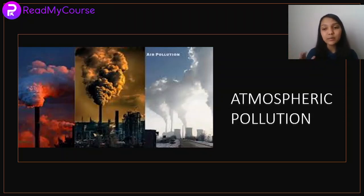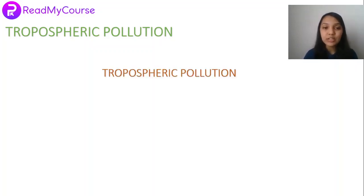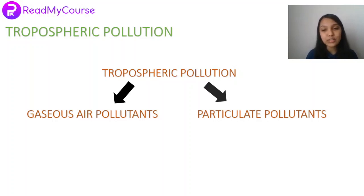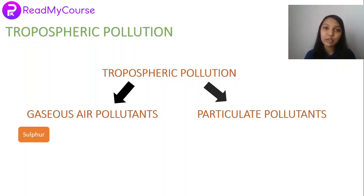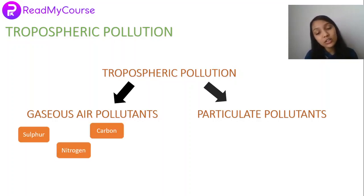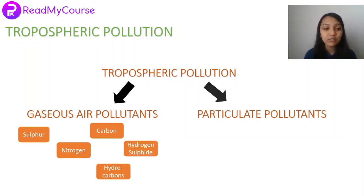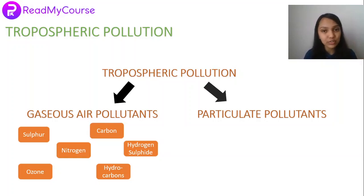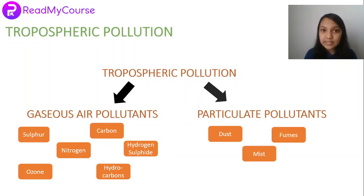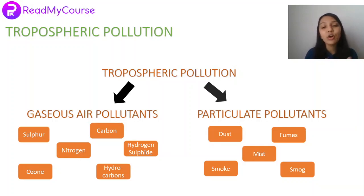When we discuss atmospheric pollution, we cover both tropospheric pollution and stratospheric pollution. Tropospheric pollution is divided into two categories: gaseous air pollutants and particulate pollutants. Under gaseous air pollutants we have oxides of sulfur, nitrogen, carbon (that is, carbon monoxide and carbon dioxide), hydrocarbons, hydrogen sulfide, and ozone. Under particulate pollutants we have dust, fumes, mist, smoke, and smog.